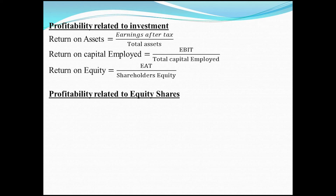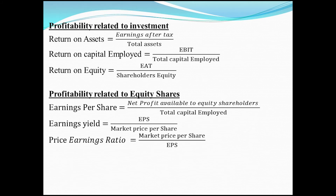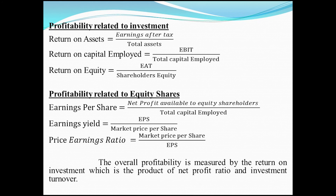The third group is profitability related to equity shares, which includes earnings per share, earnings yield, and price earnings ratio. Earnings per share equals net profit available to equity shareholders divided by the number of shares. Earnings yield equals earnings per share divided by market price per share. Price earnings ratio is the reciprocal of earnings yield — market price per share divided by earnings per share. The overall profitability is measured by return on investment, which is the product of net profit ratio and investment turnover.